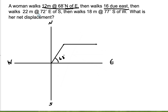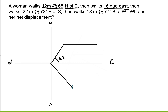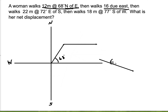Then I'm walking 22 meters, 72 degrees east of south. South points straight down, and east of that means I'm turning towards the east direction. So this angle right there would be 72 degrees. That goes at the end of the previous vector.